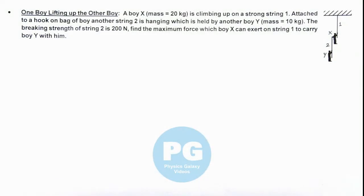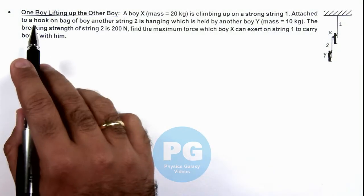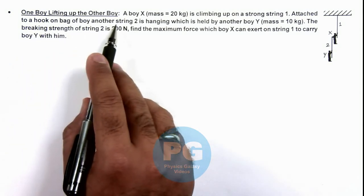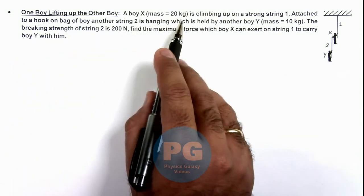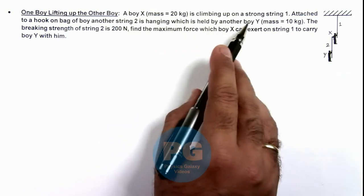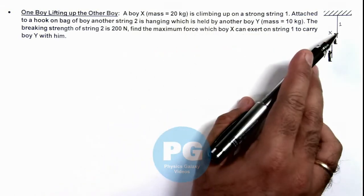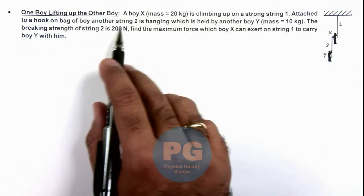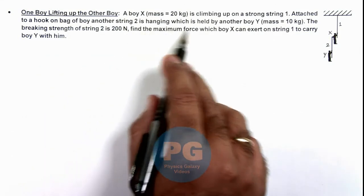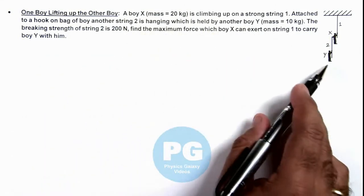This illustration is about analysis of one boy lifting up the other boy. Here we are given that Boy X, which is 20 kilograms, is climbing up on a strong string 1 attached to a hook on bag of Boy. Another string 2 is hanging which is held by another Boy Y who is having a mass 10 kilograms.